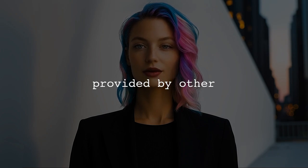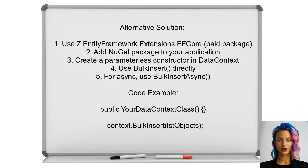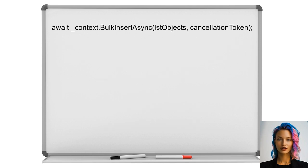Now, let's look at the answers provided by other users. An alternative solution for bulk inserting into MySQL using Entity Framework Core is the paid package Z.EntityFramework.Extensions EFCore. This package supports both .NET and .NET Core. To implement it, first add the NuGet package to your application, then create a parameterless constructor in your data context class. In your business logic, you can use the bulk insert method directly on your context without needing to call save changes. For asynchronous operations, use bulk insert async.